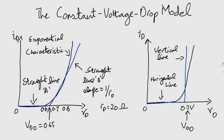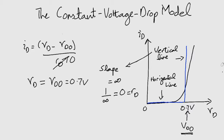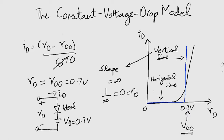In the graph, we can see that vd0 is 0.7 volts. Putting it in this equation with rd equals to 0, we see that vd is equal to vd0. So our model becomes as shown on the bottom left. The current is given by id equals vdd minus vd over r, which is 4.3 milliampere, using values from the example in the previous lesson.